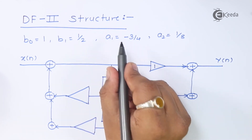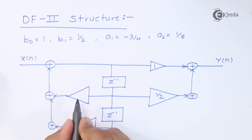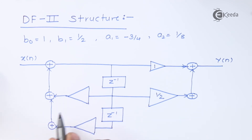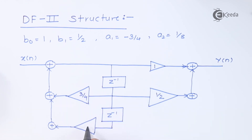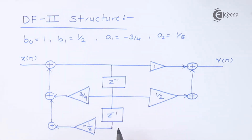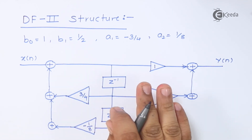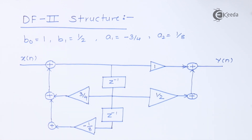For the a values in DF2, we always multiply by a negative sign. Since a₁ is minus 3/4, minus times minus 3/4 gives plus 3/4. The a₂ value is 1/8, so after multiplying by the negative sign we get minus 1/8. This completes the DF2 structure. Comparing DF2 with DF1, you can see that the DF2 structure is slightly less complex.